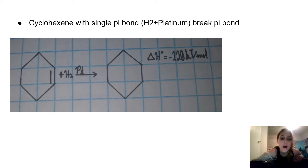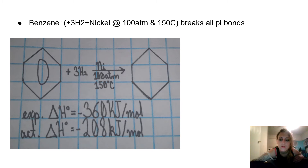Cyclohexene with a single pi bond: H2 plus platinum breaks the pi bond. Benzene plus 3H2 plus nickel at 100 atm pressure and 150 degrees Celsius breaks all pi bonds.